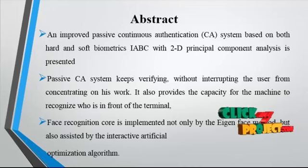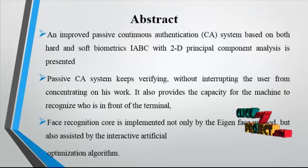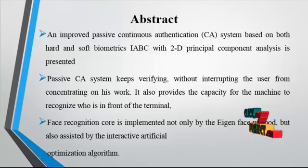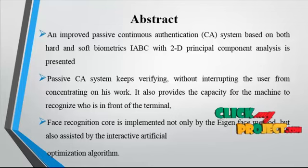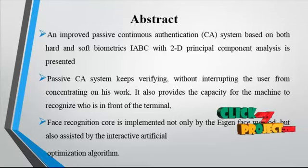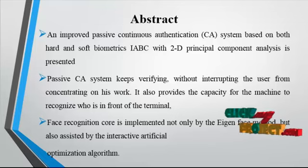Now we discuss the abstract. In this paper, an interactive passive continuous authentication (CA) system based on both hard and soft biometrics is presented. Human facial features are used as hard biometric information for the authentication process, and the clutch colors of the user are employed as the soft biometric information.